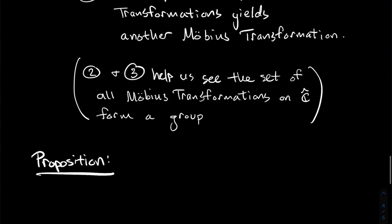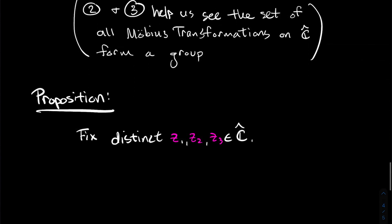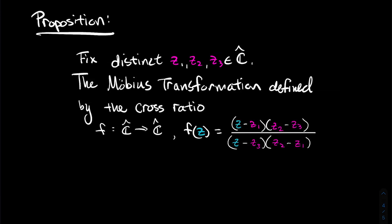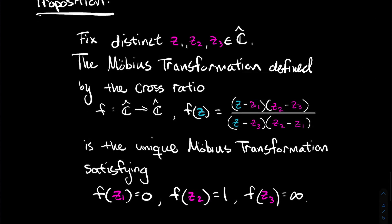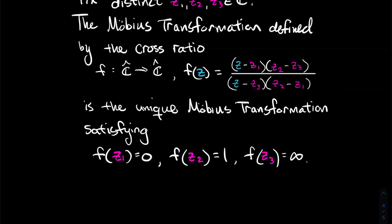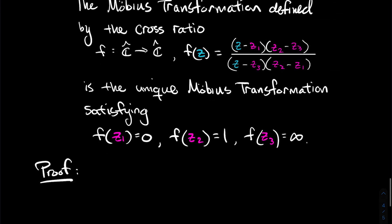So what are we going to do with the cross ratio viewed as a function? The first use is to prove the following proposition: fix three distinct extended complex numbers Z1, Z2, Z3. Then the Möbius transformation defined by the cross ratio is the unique Möbius transformation such that f takes Z1 to 0, f takes Z2 to 1, and f takes Z3 to infinity.